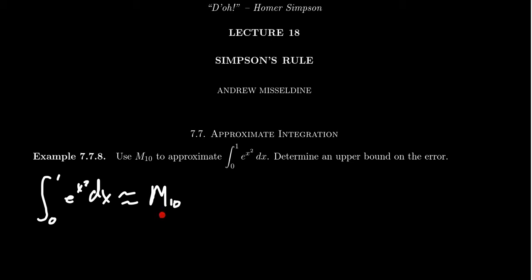Now, be aware that we want to do M sub 10. So to make sure we have the right approximation for this rule, I do recommend those online calculators I had presented in a previous video. You can find a link to those websites in the description below. And if you use one of those, you're going to end up with an approximation of 1.460393.